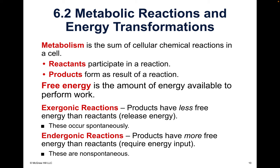Metabolic reactions and energy transformations: metabolism is the sum of cellular chemical reactions in a cell. If you have a high metabolism, your cells can process chemical reactions quicker and process food quicker. There are reactants and products — reactants are on the left side of the equation and products are on the right, because products are what are produced from the chemical reaction. Free energy is the amount of energy available to perform work — it's the energy just hanging out, waiting to be used.